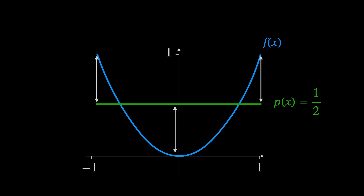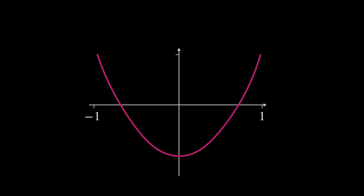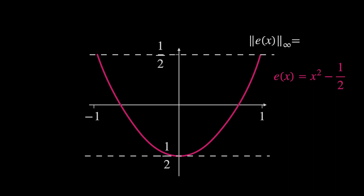We can see this more clearly by plotting f minus p. This curve, f(x) - p(x), is called the error function e(x), which is an important function in minimax approximation. The maximum of the absolute value of e(x) over the interval gives us the infinity norm — visually, this is the point or points on the curve furthest from the x-axis, which in this case is 1/2.